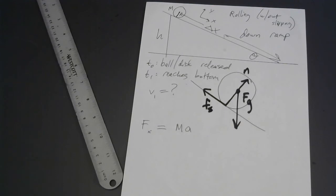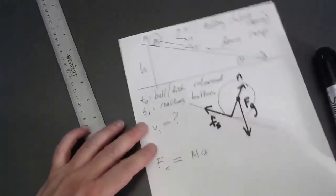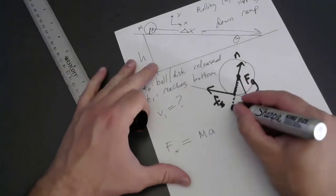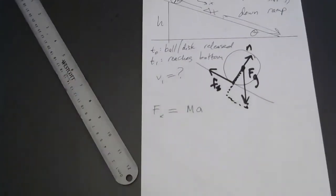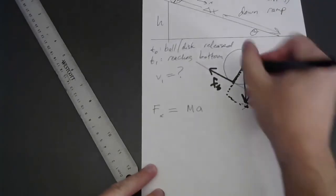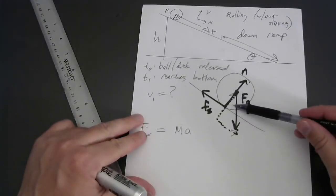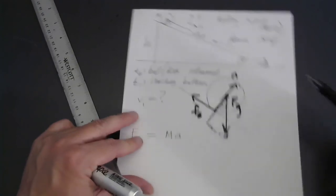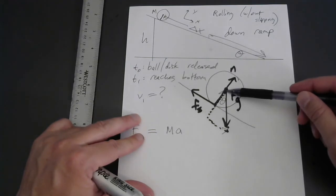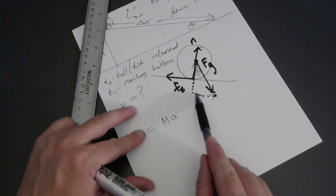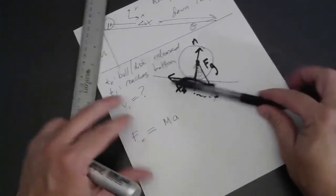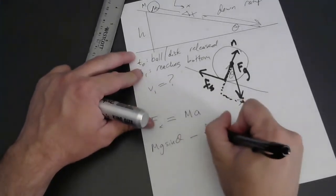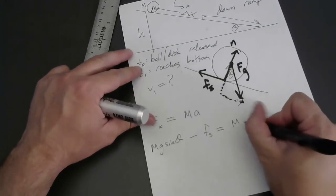Writing Newton's second law along the ramp (down positive): the component of gravity down the ramp is m g sine theta, minus the static friction force f_s, equals M a. The component of gravity along the ramp comes from the geometry: since the ramp angle is theta, gravity's component down the ramp is M g sine theta, and the friction acts up the ramp opposing the translational motion.